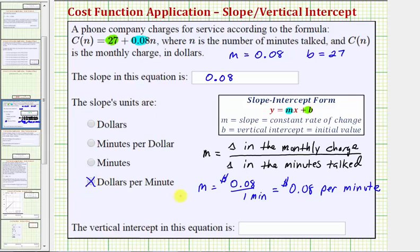And then finally we're asked to determine the vertical intercept, which is b, and we determined b equals 27. So if b equals 27, this would be the ordered pair 0 comma 27.